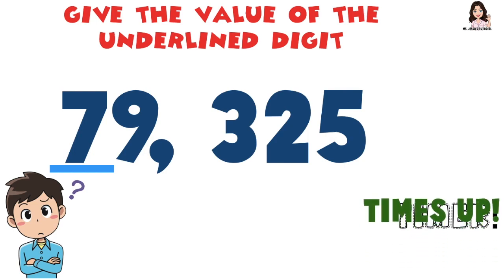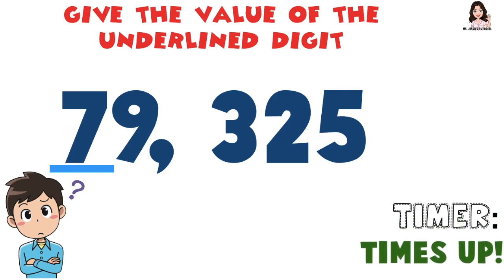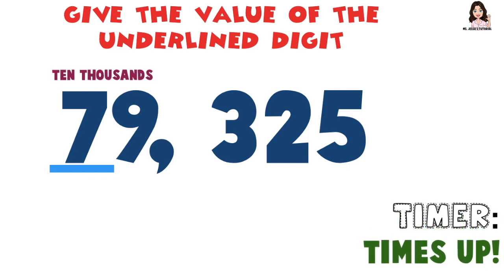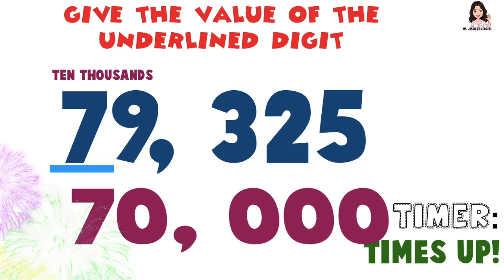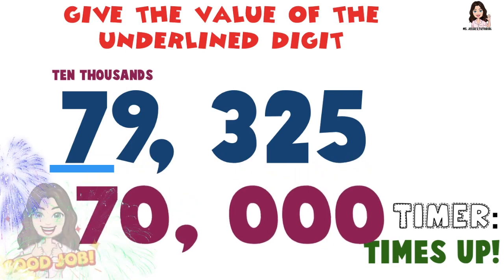Time's up! What is the value of digit 7 at the ten thousands place? Amazing — that is 70,000!